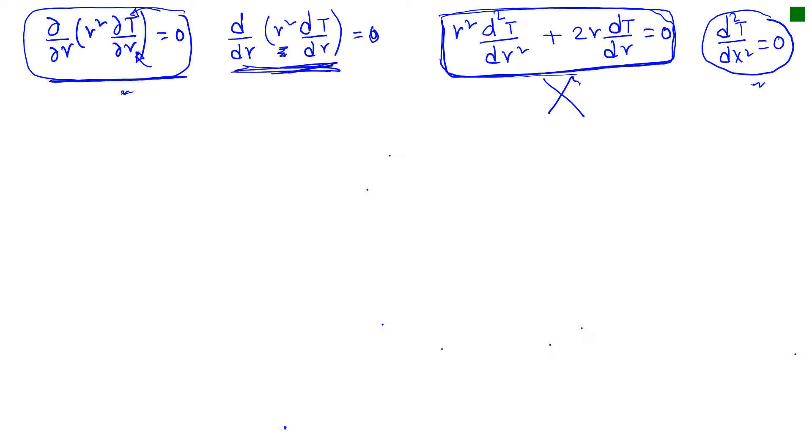So D D R of something is equal to zero. So it's R square D T D R equal to some constant. And so that leads to D T D R equal to C1 over R square and that leads to T is equal to C1 integral of 1 over R square D R plus C2 another constant of integration.